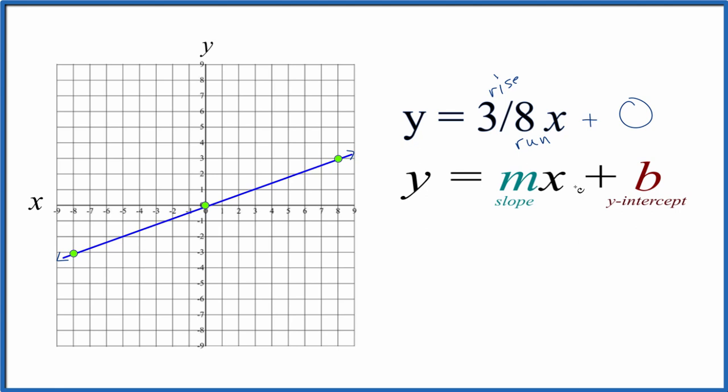Again, you could use a table of values. Slope intercept form is a lot easier, especially when you have fractions like three-eighths x. This is Dr. B. Thanks for watching.